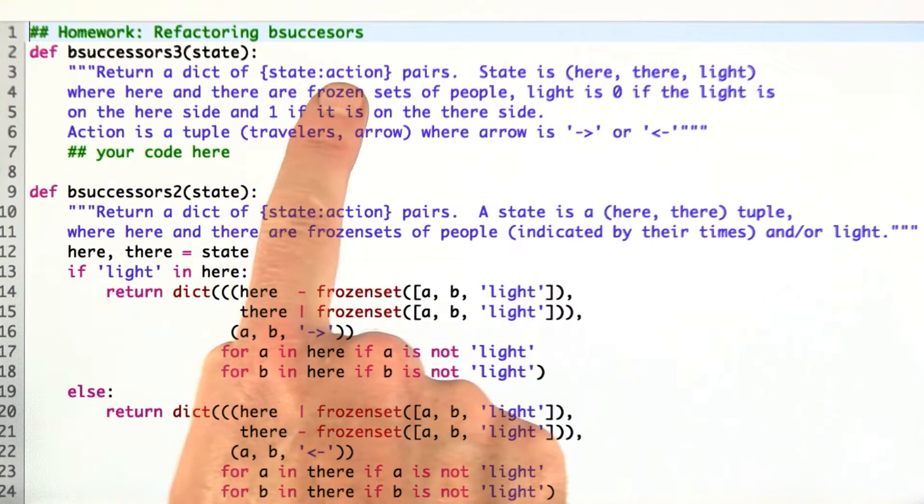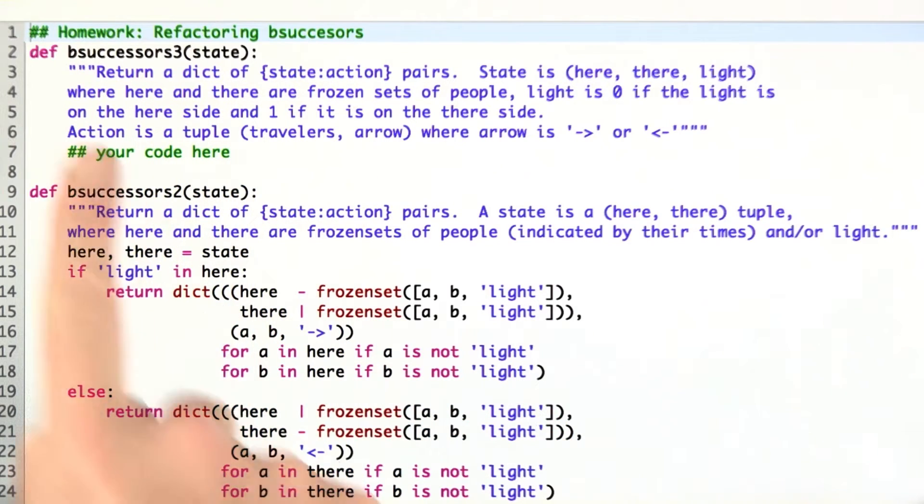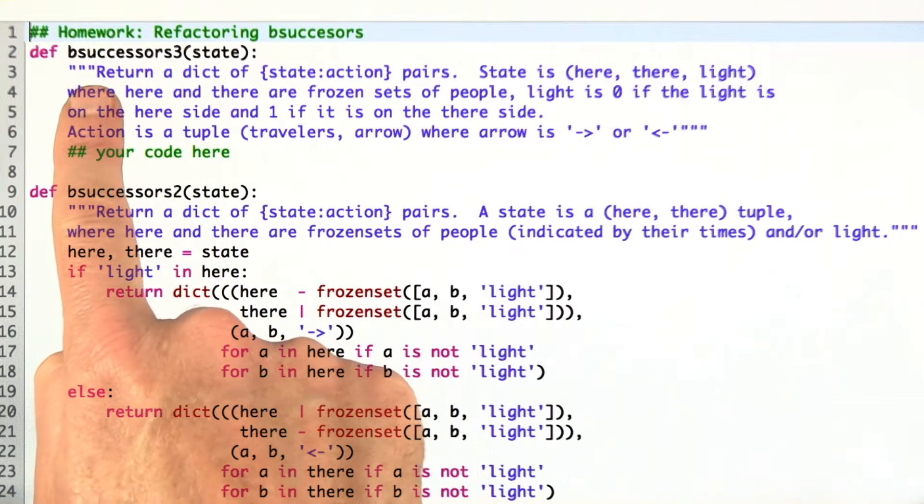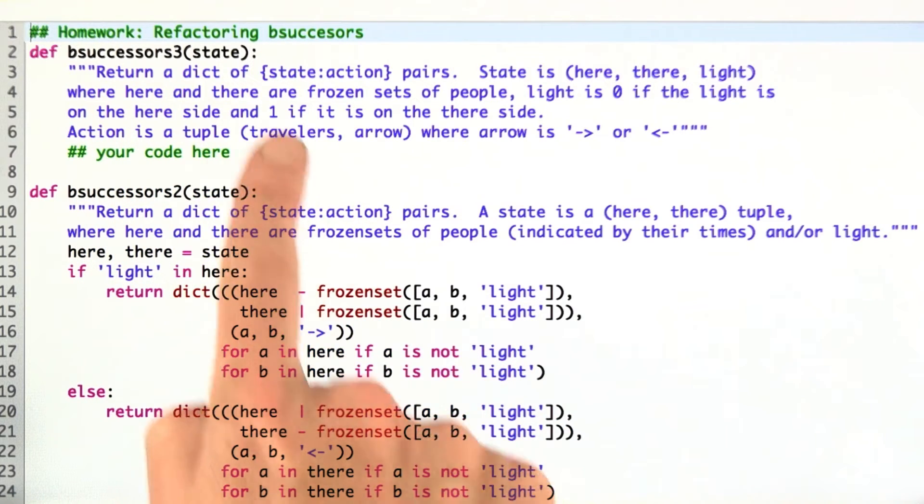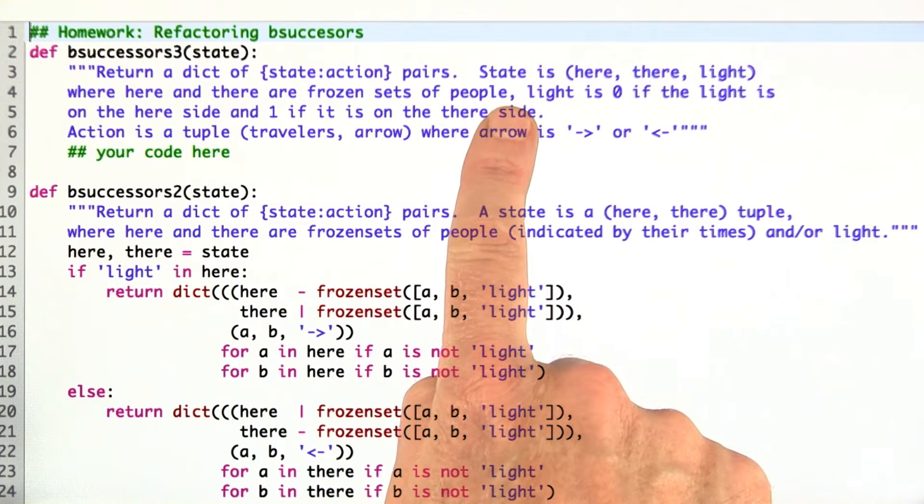This homework is about refactoring the bridge successor function. I want you to write a new function, we'll call it bSuccessors3, which takes a bridge state as input. But we're going to represent the states in a different way.